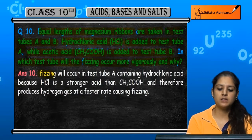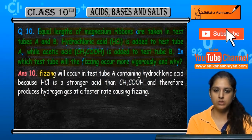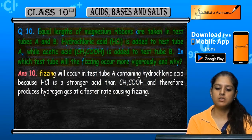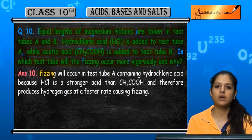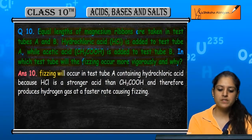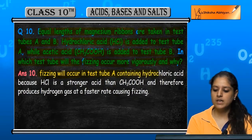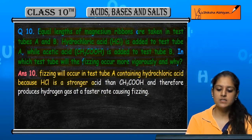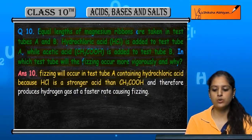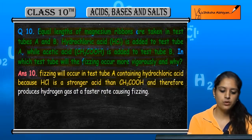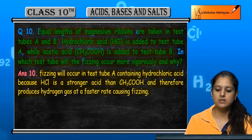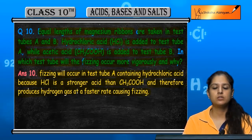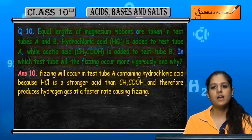Fizzing zyada strongly acidic solutions mein hogi. HCl aur acetic acid mein se HCl strong hai. So fizzing will occur more vigorously in test tube A containing hydrochloric acid, kyun ki HCl is a stronger acid than acetic acid (CH₃COOH), and therefore produces hydrogen gas at a faster rate, causing more fizzing.